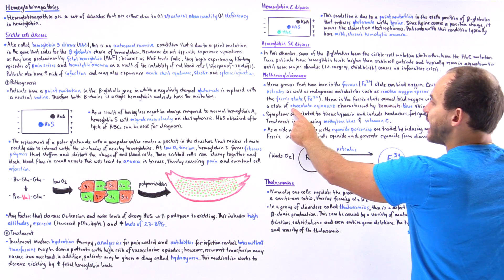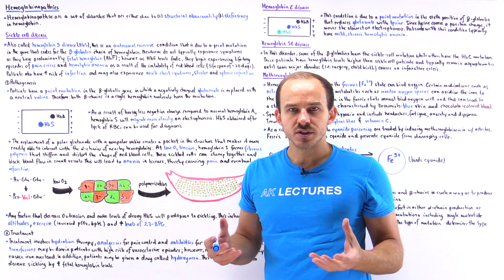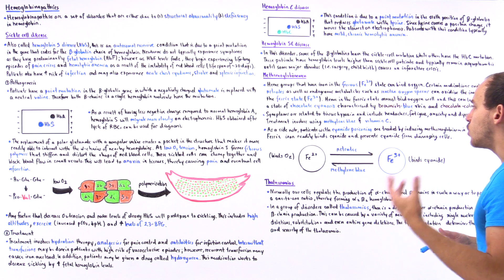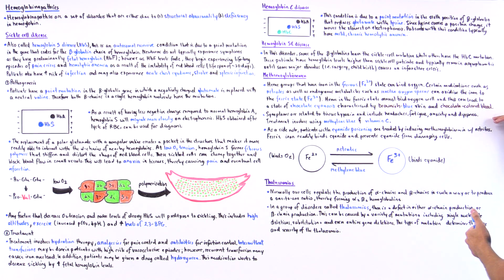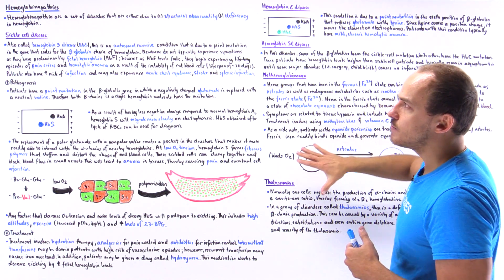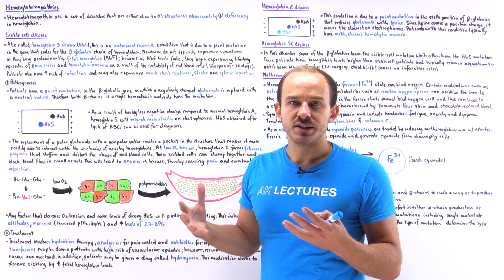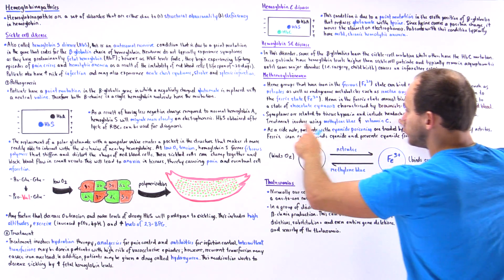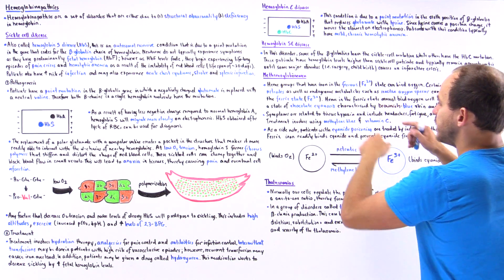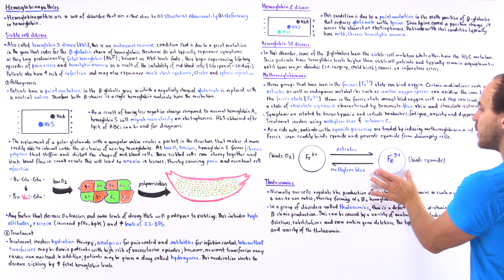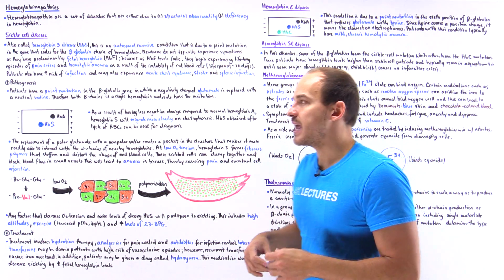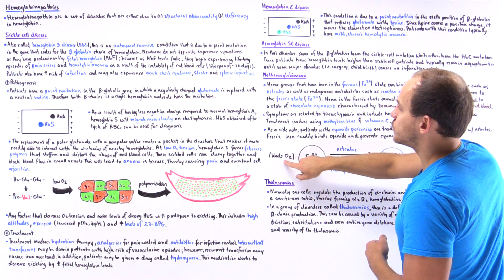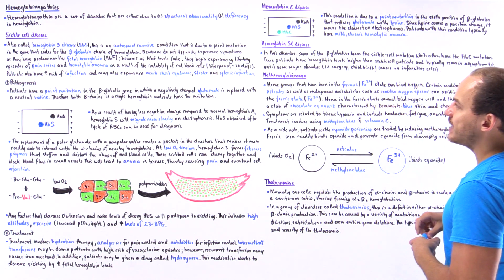Methemoglobinemia causes a state of chocolate cyanosis — characterized by a brownish-bluish appearance of the blood, mucosal membranes, and chocolate-colored blood. Patients experience symptoms of tissue hypoxia such as headaches, fatigue, anxiety, and dyspnea. Treatment involves giving methylene blue as well as vitamin C, both of which convert the ferric state back into the ferrous state. A helpful mnemonic: ferrous contains an 'o' — like oxygen — so ferrous binds oxygen well, while ferric does not.